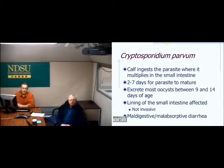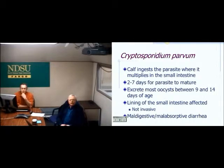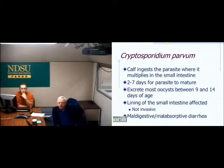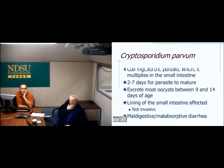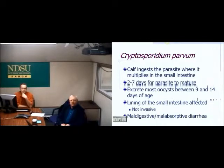Cryptosporidium is a parasite in calves — it sits on the lining of the intestine and causes absorption problems, but it usually occurs with something else like E. coli or rotavirus rather than being a problem by itself. It's difficult to treat, there's no vaccine for it, and you wouldn't know you had it unless you sent a sample to the diagnostic lab.